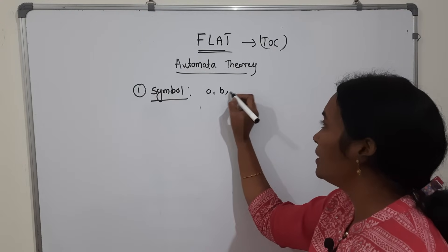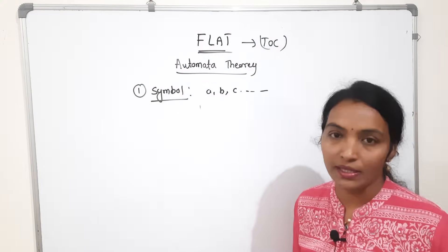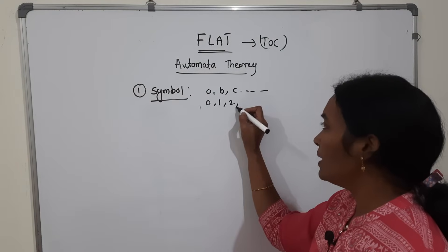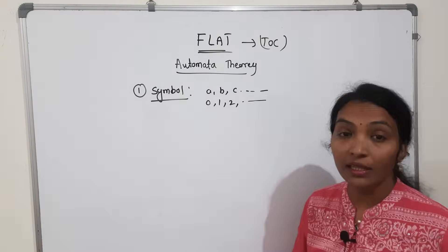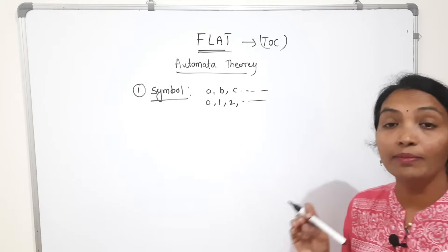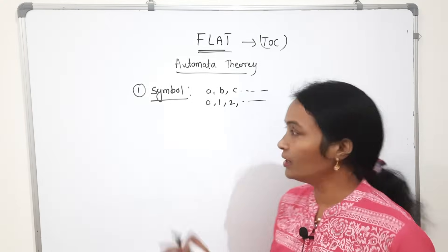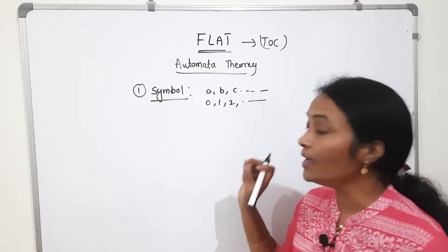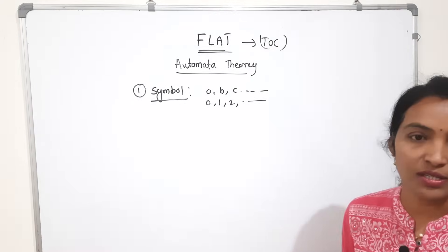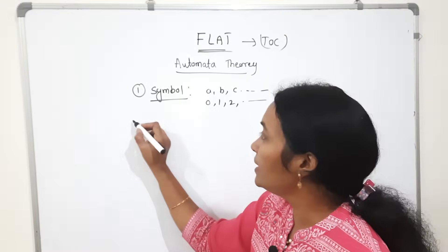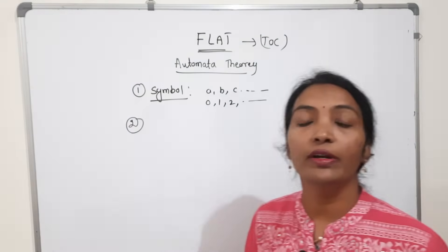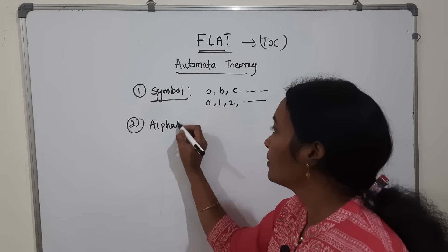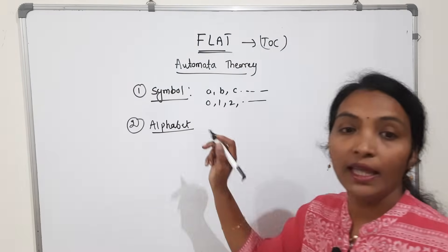A, B, C — these are all symbols. Also 0, 1, 2 — these are symbols. A symbol is nothing but a single character.